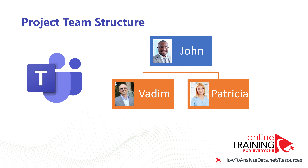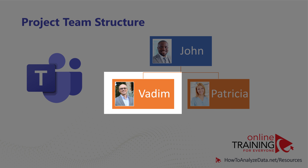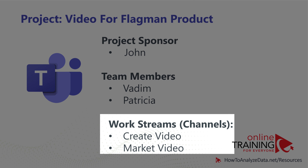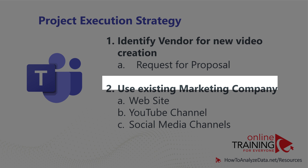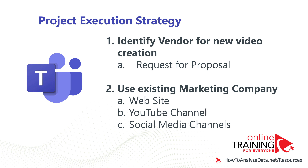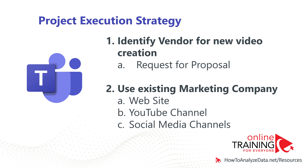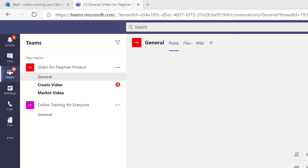We are working on a project together using Microsoft Teams. Patricia is the team lead and Vadim is the team member — both report to John. We've identified two main work streams: creating the video and marketing the video. Our strategy is to find a new vendor to create the video and use an existing vendor to market it. To be compliant with laws and regulations, we are required to create a request for proposal, reach out to vendors, evaluate proposals, and then select the vendor. Because both team members work remote, we decided to use Microsoft Teams' collaboration features to develop the request for proposal together.